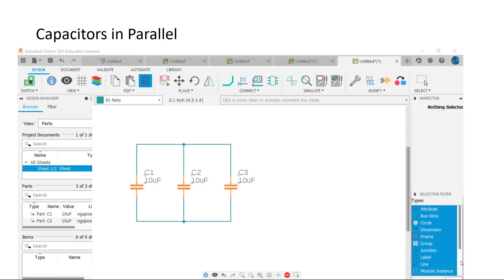Capacitors in parallel add. Mathematically, Ct equals C1 plus C2 plus C3 and so on. So in our example here, Ct equals 10 microfarads plus 10 microfarads plus 10 microfarads for a total equaling 30 microfarads. Often power supply capacitors are bulked up this way to make larger capacitances.